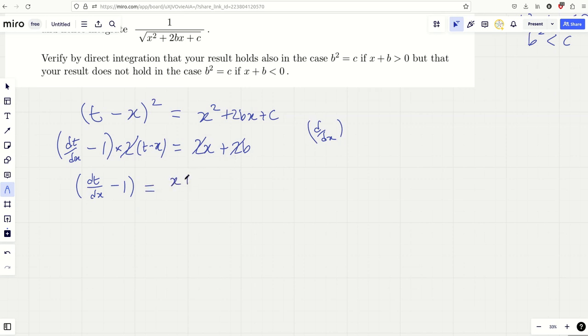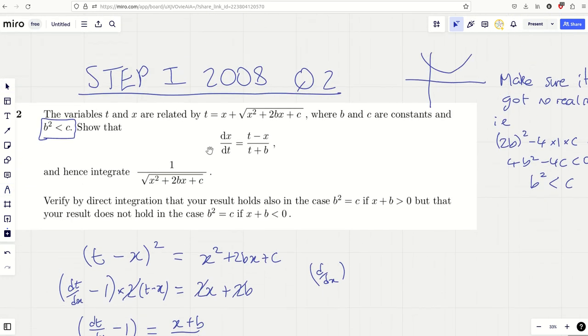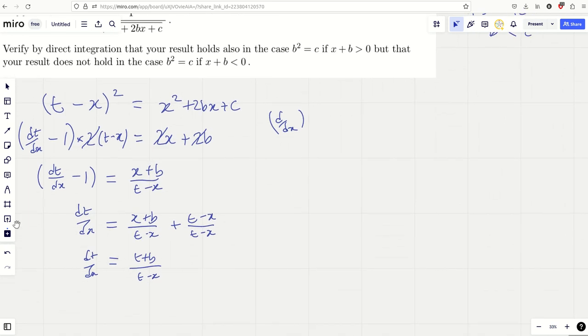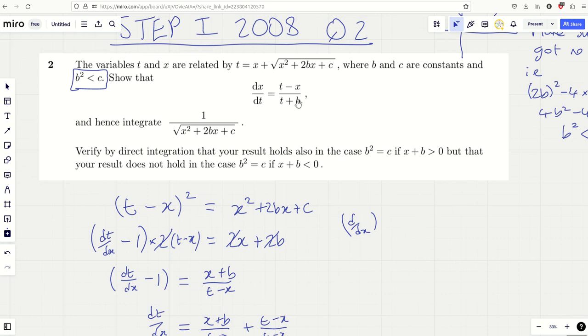I reckon if I look at my old solution to this, I can't because it's at work at the moment, but I bet you I did it in a really cumbersome and crude way. But now I prefer slightly faster approaches. Okay, that gives me x plus b over t minus x, and then I just added the 1 over. So dt by dx is going to be x plus b over t minus x, plus t minus x over t minus x.